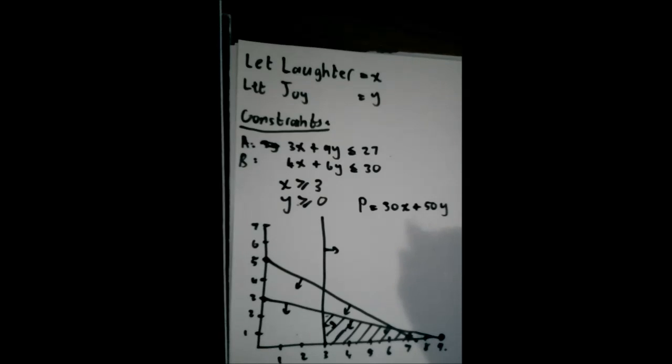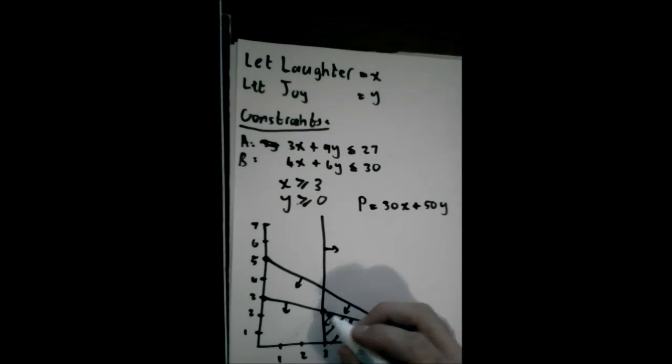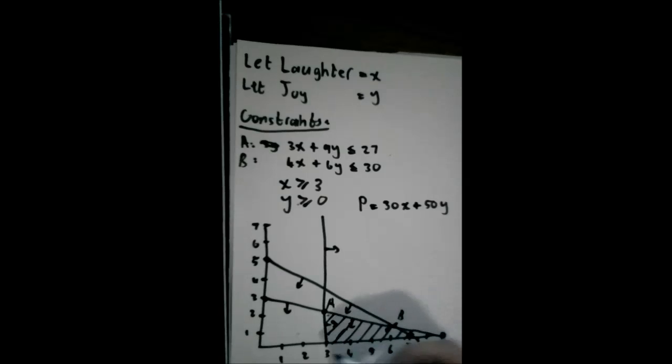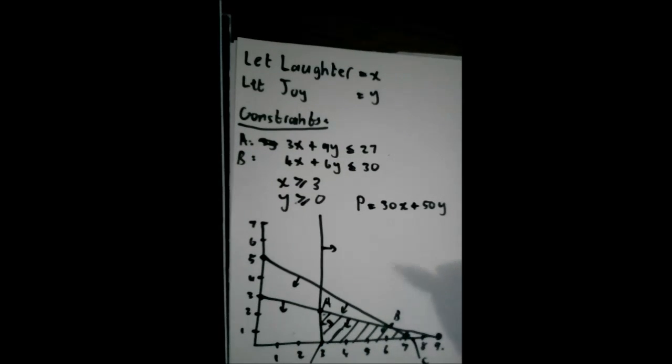And to find where that is the best, where it is optimal, where it is maximum, we look at all the vertices, which in this case are four. That one, let's call it A. This one, let's call it B. This one here, let's call that C. And this one, let's call it D. Now we need to find out which one of these vertices has the maximum value that satisfies this optimal function.